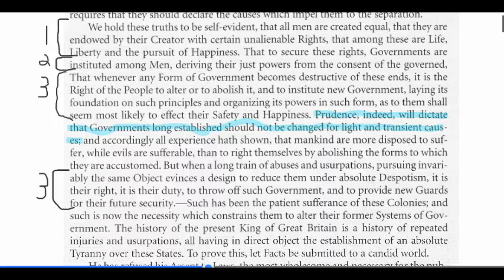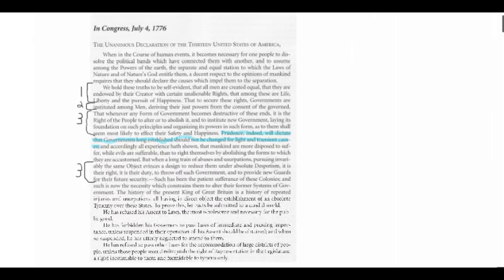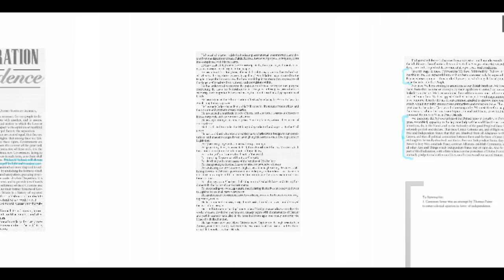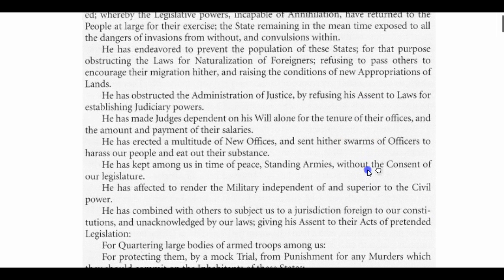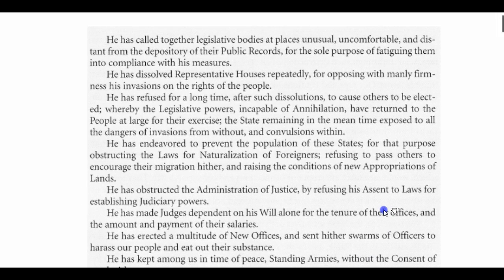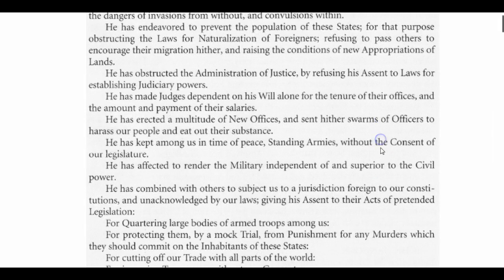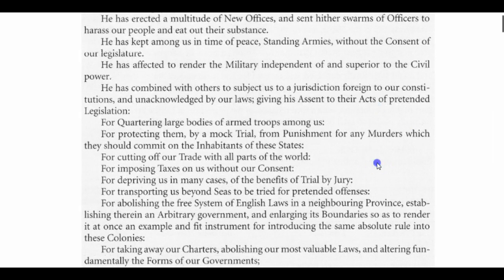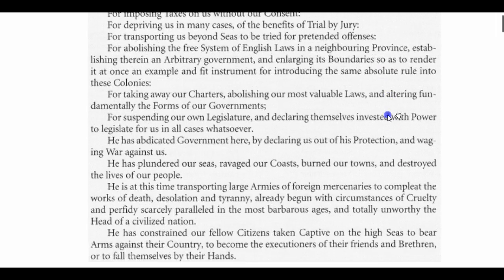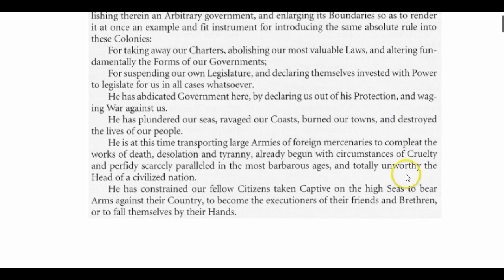Then, looking at the next line: 'To prove this, let facts be submitted to a candid world.' The middle section of the document lists all of these sentences that all start with 'He.' 'He has done this. He has done that.' 'He,' of course, is the King of Britain. What the colonists did here was to list just about every single right or thing that the king had done that denied the colonists their rights.